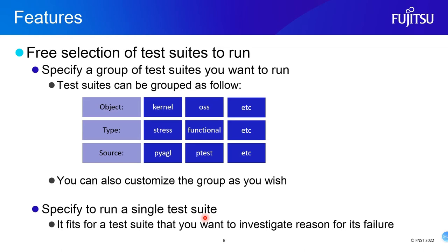Agile Extended Test also supports free selection of test suites to run. You can specify a group of test suites. There are many ways to classify a test suite: by test object, such as kernel test, OSS test, etc.; by test type, such as stress test, function test, etc.; by source type, such as PUI, HR test, PE test, etc. You can also customize a group or specify a single test suite to investigate the reason for a failure.